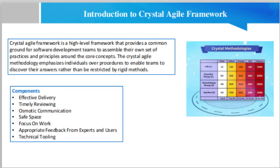The third component is osmotic communication. Alistair Cockburn proposed that having a common location and the same physical seating for the team is crucial because it allows the unconscious assimilation of ideas and enhances the group's cohesiveness. He called this osmotic communication. This concept serves as a criticism of working from home.